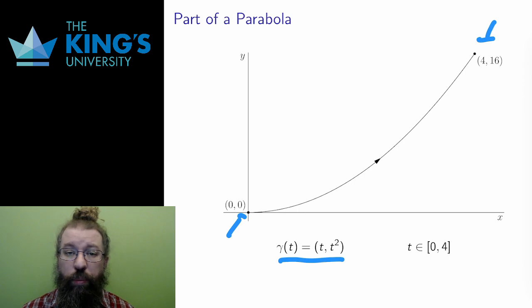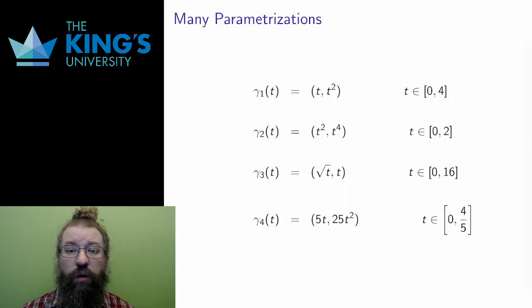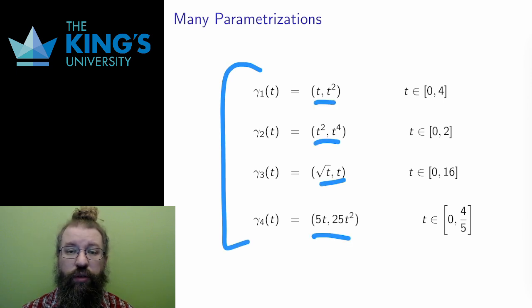Here are four parametric curves. All of these have the same relationship where the y-coordinate is the square of the x-coordinate. t squared is t squared, t to the fourth is t squared squared, t is root t squared, and 25t squared is 5t squared. Therefore, they all trace the parabola y equals x squared.